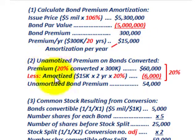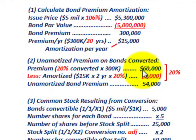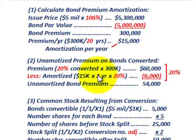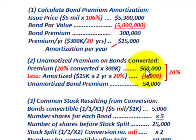Next we determine the unamortized bond premium on the bonds that are converted. We have the premium: 20% of the total $300,000 gives us $60,000 of premium on the converted bonds. We subtract what we've already amortized: $15,000 per year times two years, times 20% converted, gives us an amortized amount of $6,000. So the unamortized bond premium — the difference — is $60,000 less $6,000, which equals $54,000.